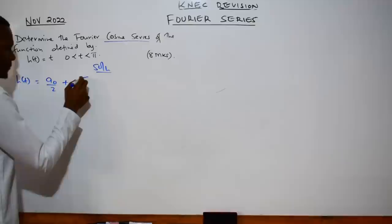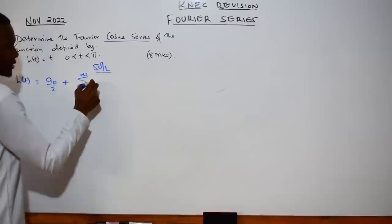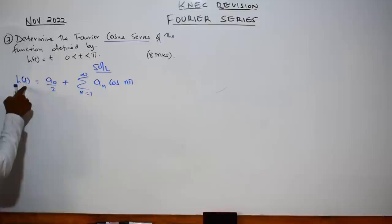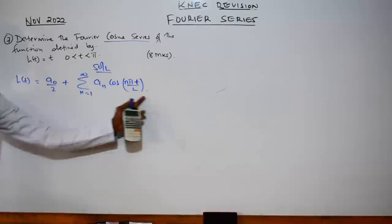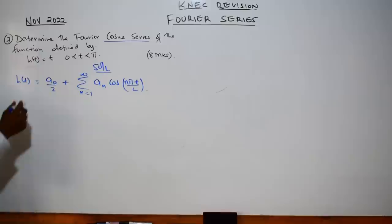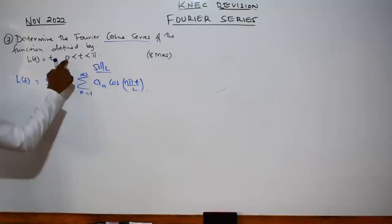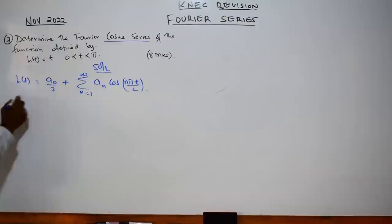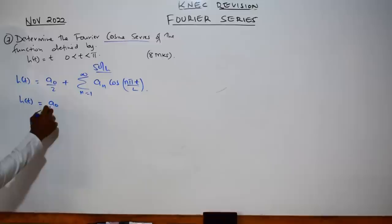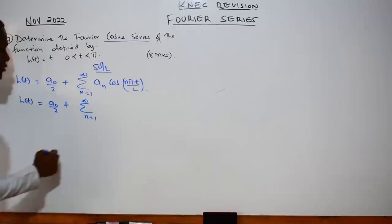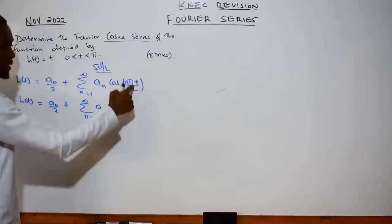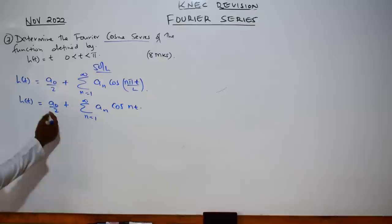Since this is an even function, we are going to find two things: a₀ and aₙ. The function will be defined by a₀ over 2 plus the summation from n=1 to infinity of aₙ cos(nπt/l). Our variable is t. Now, what is our l? Since the range is from 0 to π, our l will be π. So the π's cancel and we remain with t.